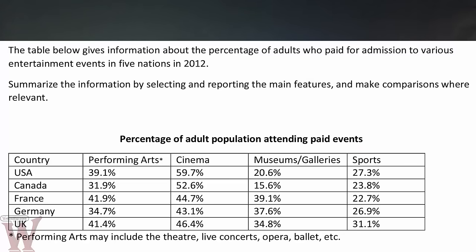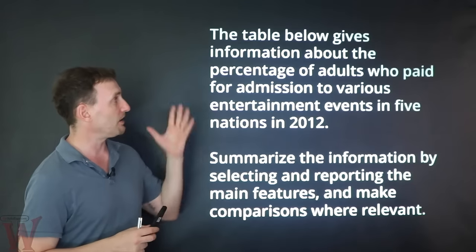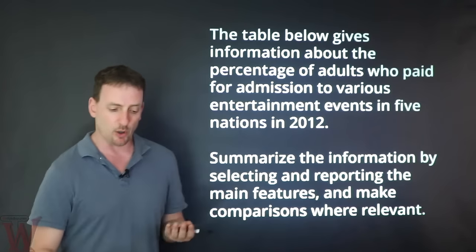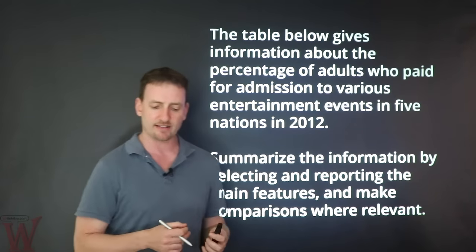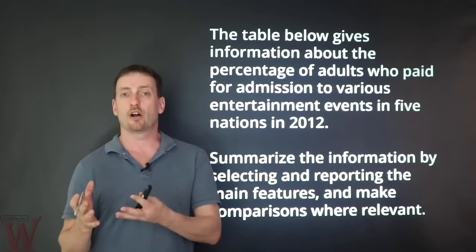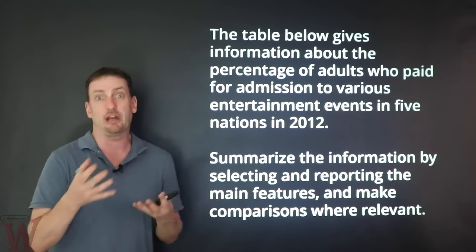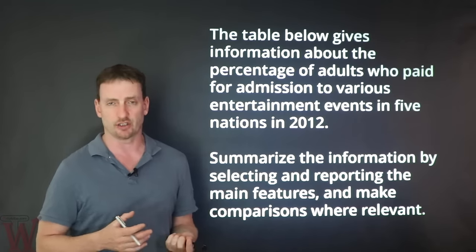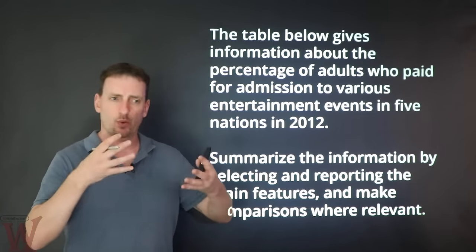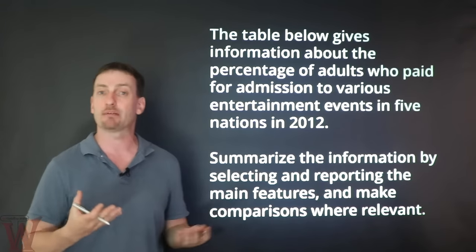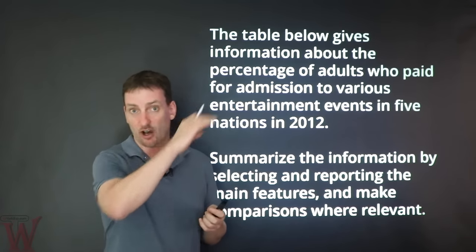So here is the task we're going to look at today. You can press pause on your video player, look at it, read the task, look at the table, and then we'll come back and go through it together. The table below gives information about the percentage of adults who paid for admission to various entertainment events in five nations. Very straightforward. All you're going to do is paraphrase this task and put it into your introduction. All you need to add is the unit of measure — what do the numbers actually mean, what do they represent — and you'll get that from the table itself, on top of the table.